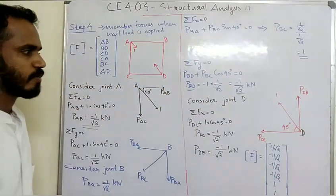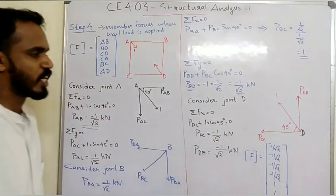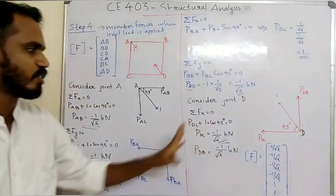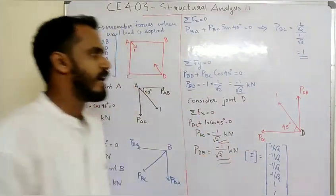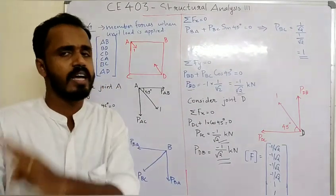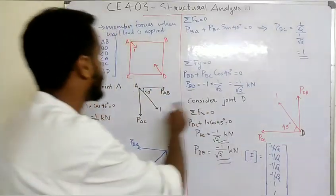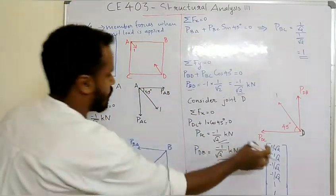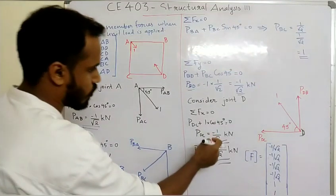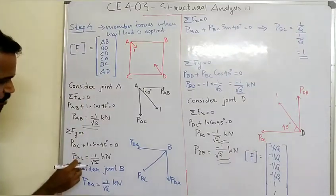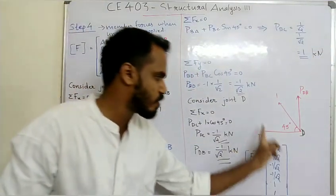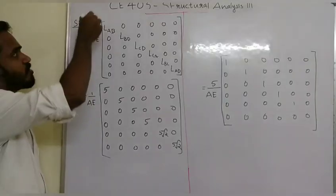At joint D: sigma Fx equals zero — PDC plus 1 into cos 45 degrees equals zero, so PDC equals minus 1 by root 2 kilonewton. From the vertical force, we get the same value. So the force transformation matrix values are: AB = DC = minus 1 by root 2 kN, CA = minus 1 by root 2, BC = 1, AD = 0. This is the force transformation matrix.